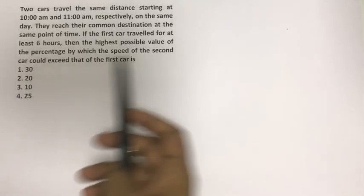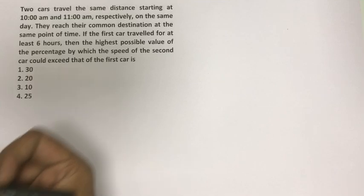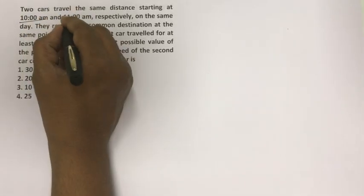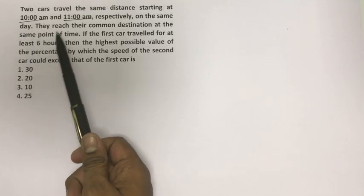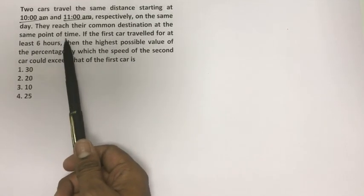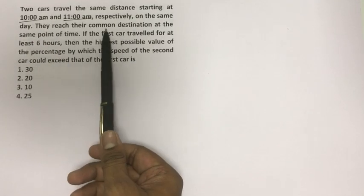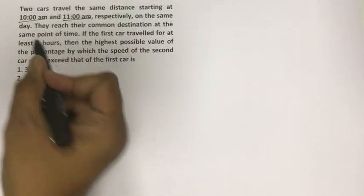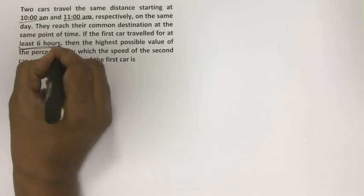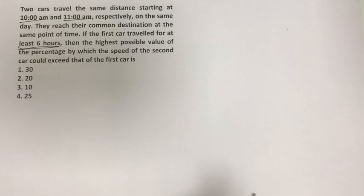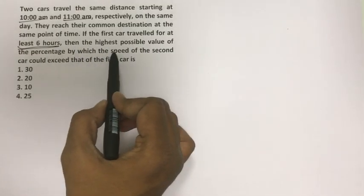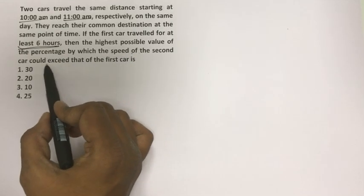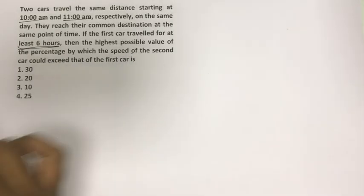Okay, I hope you have read this. There are two cars, one starts at 10:00 and one at 11:00. They reach their common destination at the same point of time. If the first car travelled for at least 6 hours, then what is the highest possible value of the percentage by which the speed of the second car could exceed that of the first car?